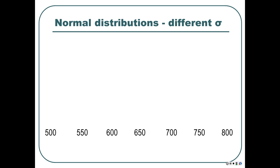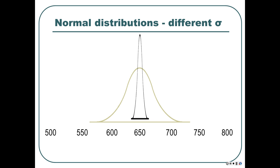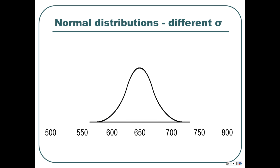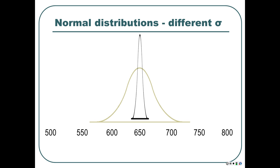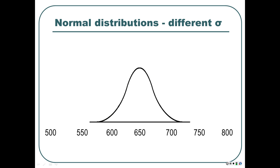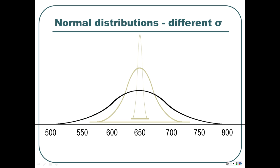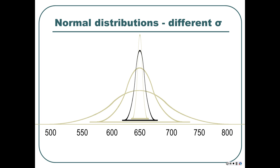When you change the standard deviation, you're not sliding things around. Here's a distribution with a mean of 650 and a standard deviation of maybe 50 points. Here's another normal distribution — this one might have a standard deviation of 5 points. With a smaller standard deviation, all the scores are squished together; there's a greater density of scores piled up in the middle. With a larger standard deviation, they're more spread out. So the standard deviation tells you how spread out the normal distribution is, and the mean tells you where on the number line it sits.